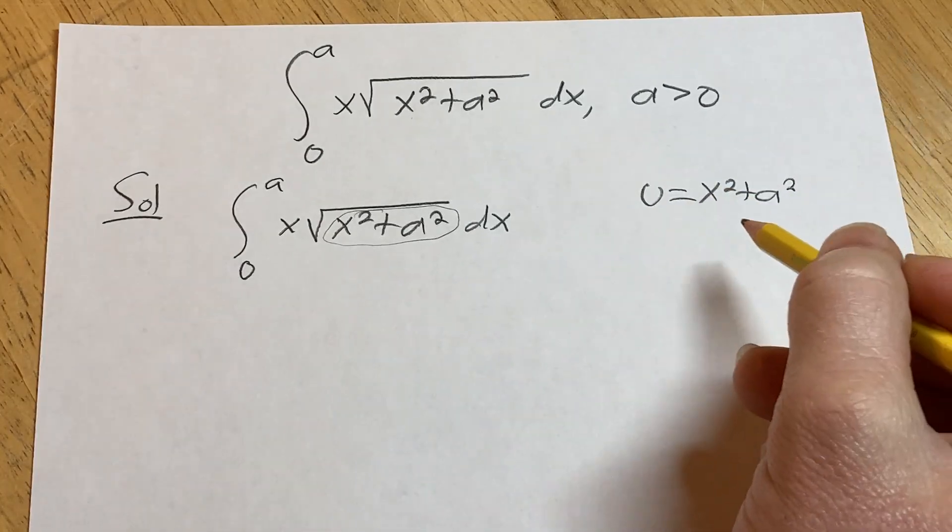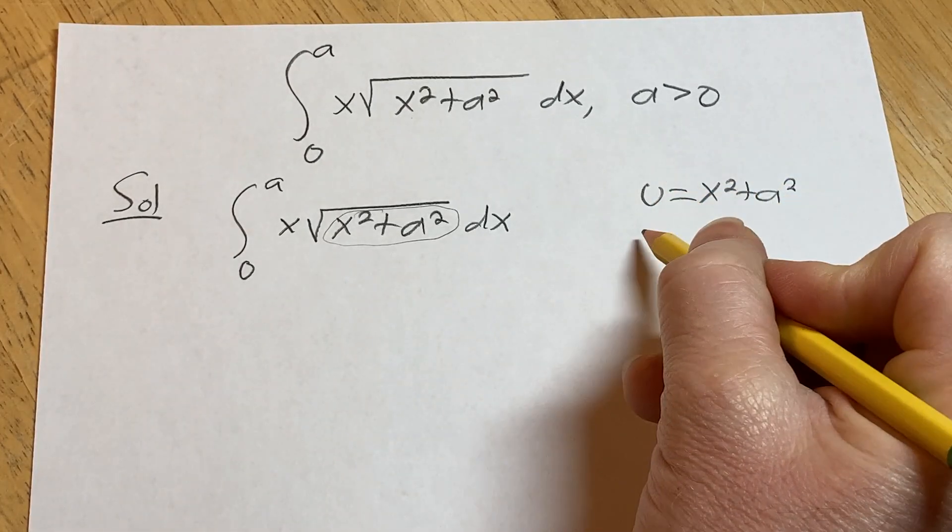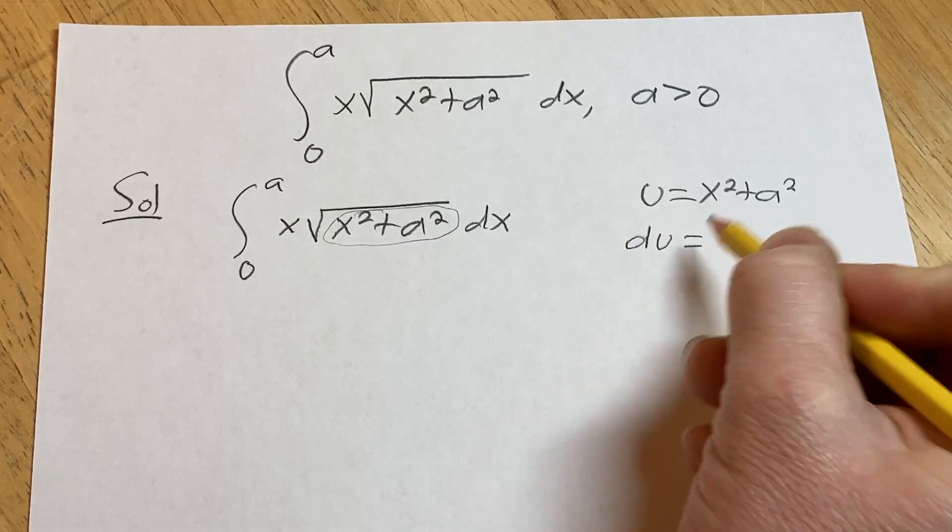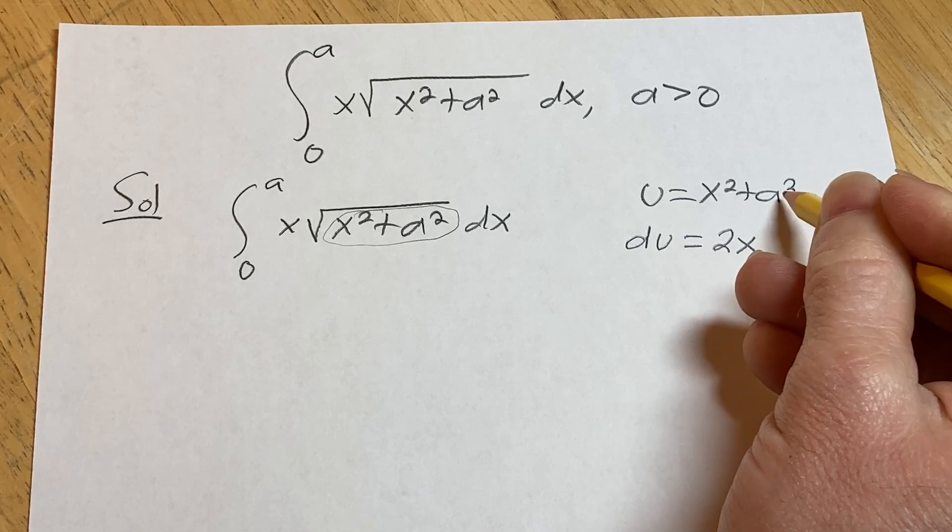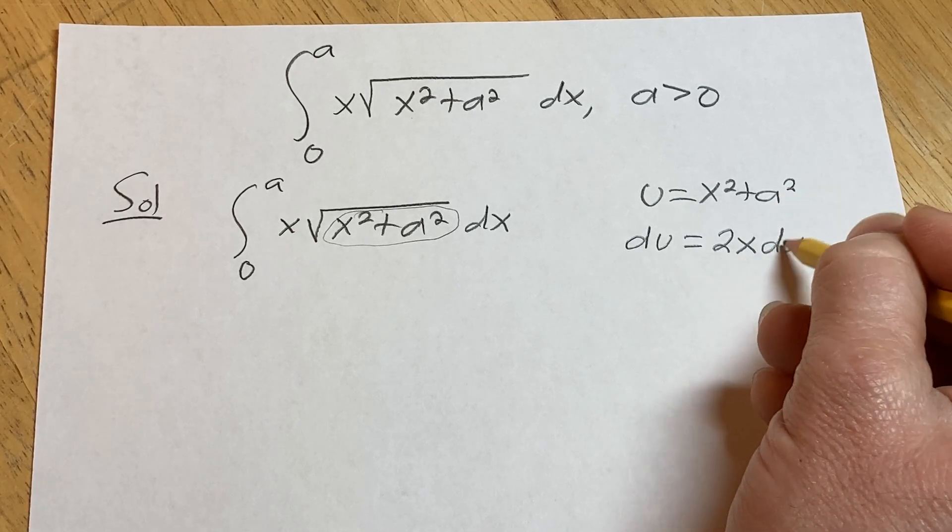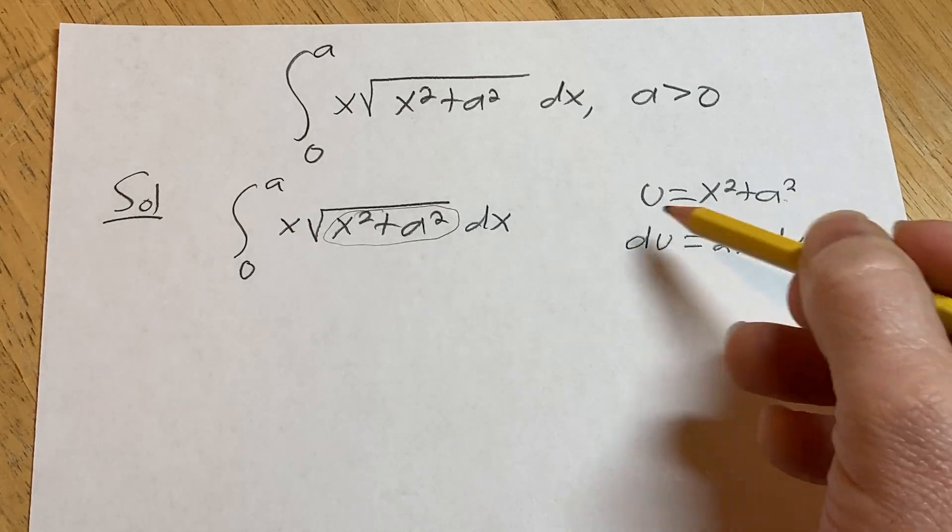And now we'll take the derivative of both sides. So the derivative of u is just du. The derivative of x squared is 2x. And this derivative is going to be 0, it's a constant. So just 2x dx. A squared is a constant, so its derivative is 0.